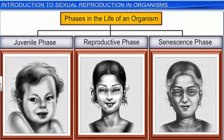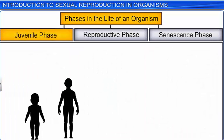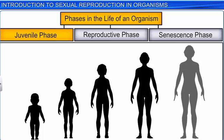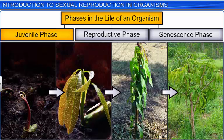All organisms go through three phases of life: the juvenile phase, reproductive phase, and senescence phase. The juvenile phase is a period of growth characterized by an increase in height in all animals, including human beings. Whereas in plants, we see the emergence of new leaves during the juvenile phase.